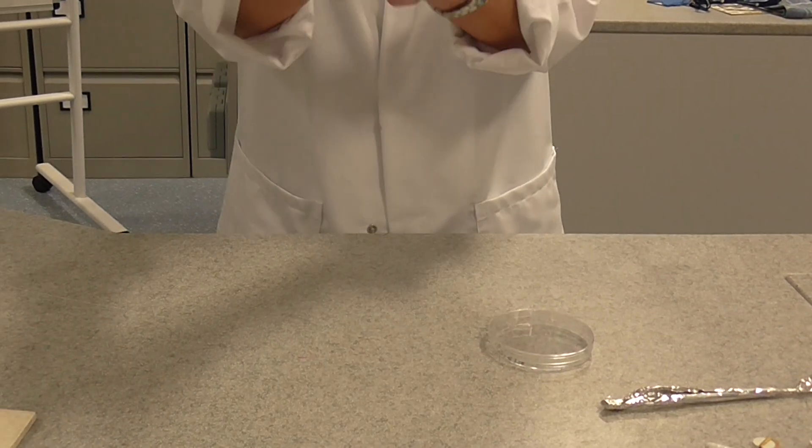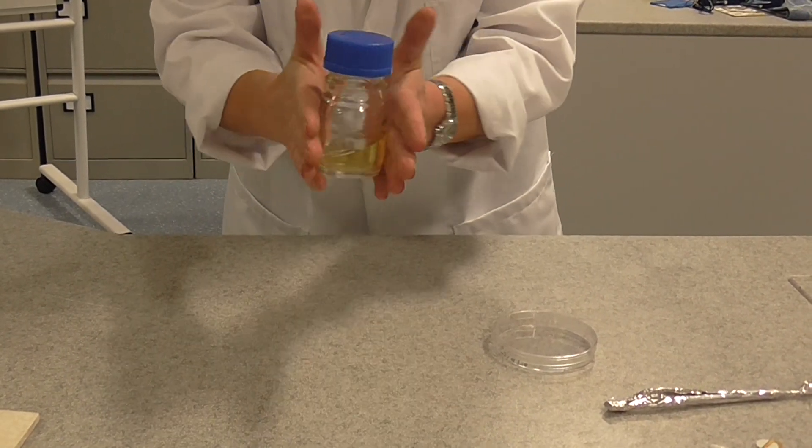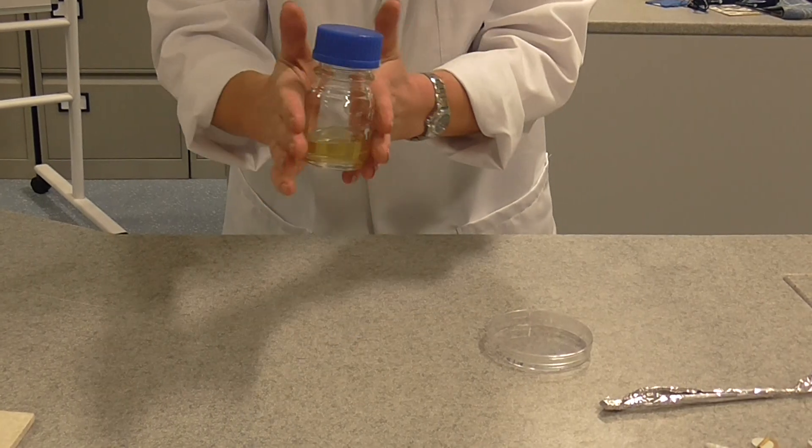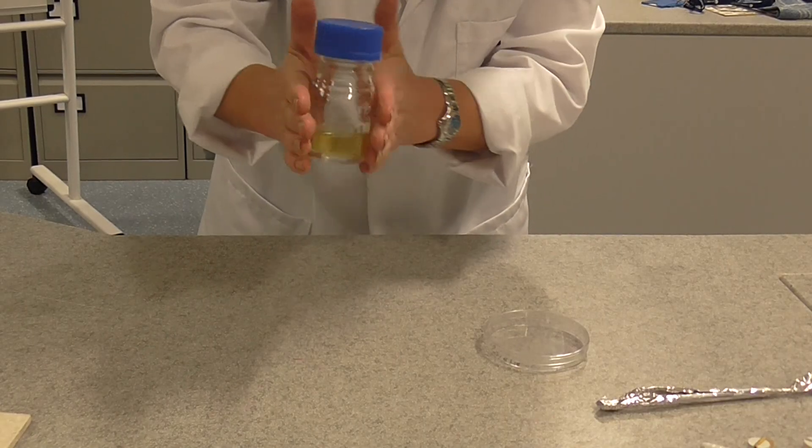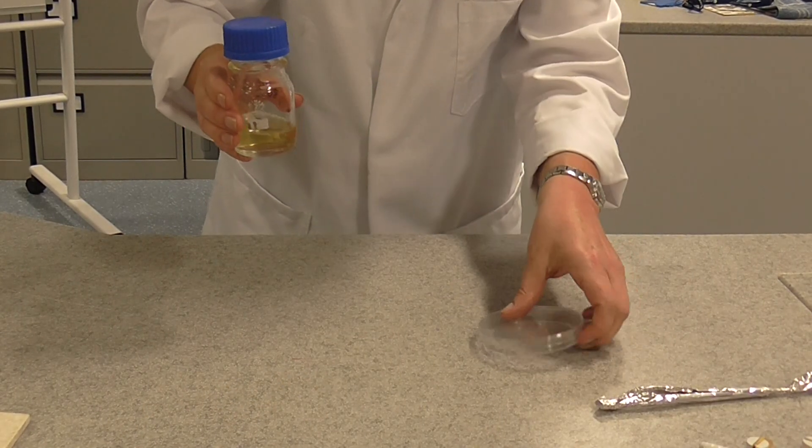We need to now make sure the bacteria is carefully mixed in with the agar. You don't want to shake it because it will form lots of bubbles, become a bit frothy. So we're just going to gently roll it.